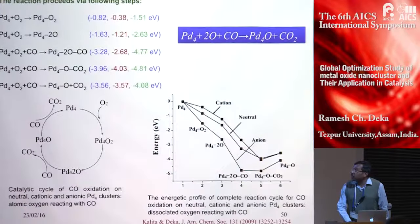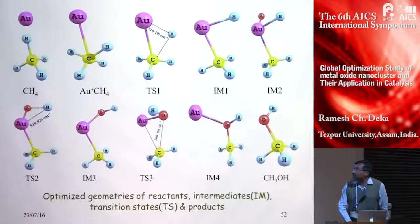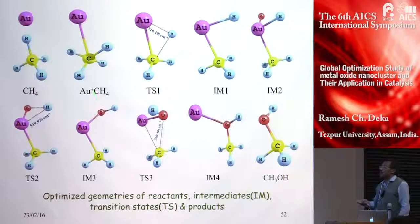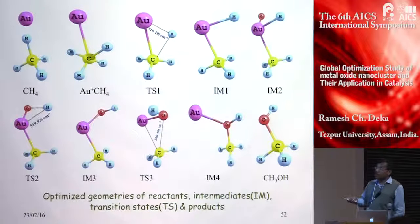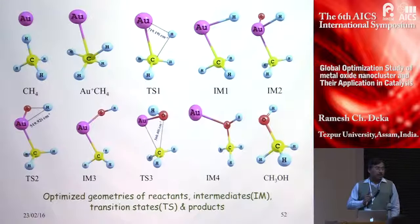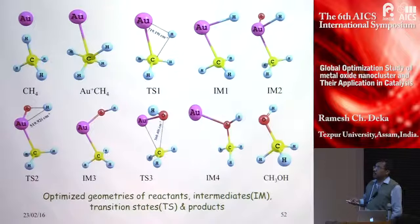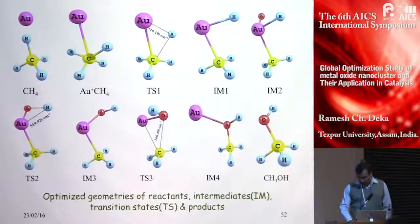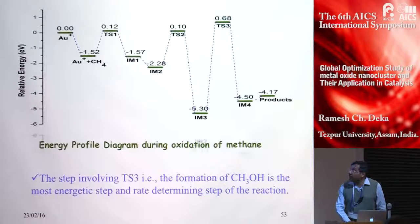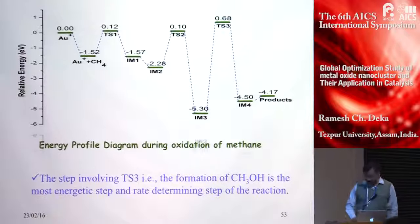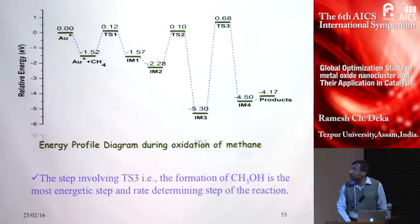We also work on conversion of methane to methanol. Methane is the most stable hydrocarbon and its activation is very difficult. We use nanoclusters and nanoparticles to activate methane and convert it to methanol, and these are the detailed mechanistic steps involved in that conversion.